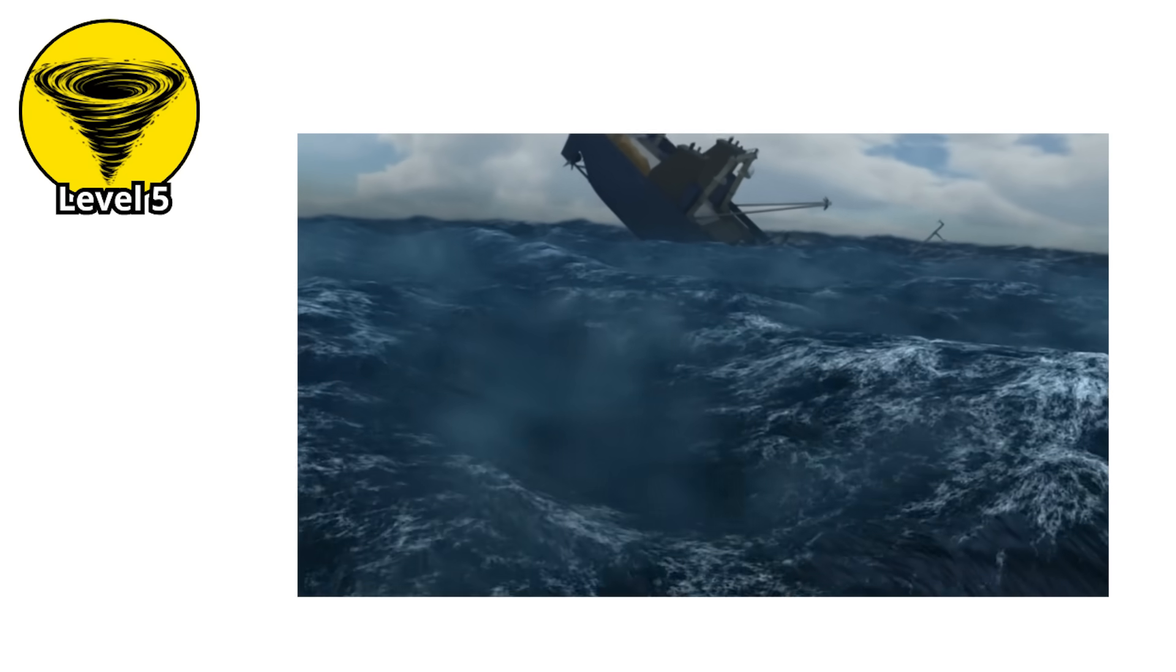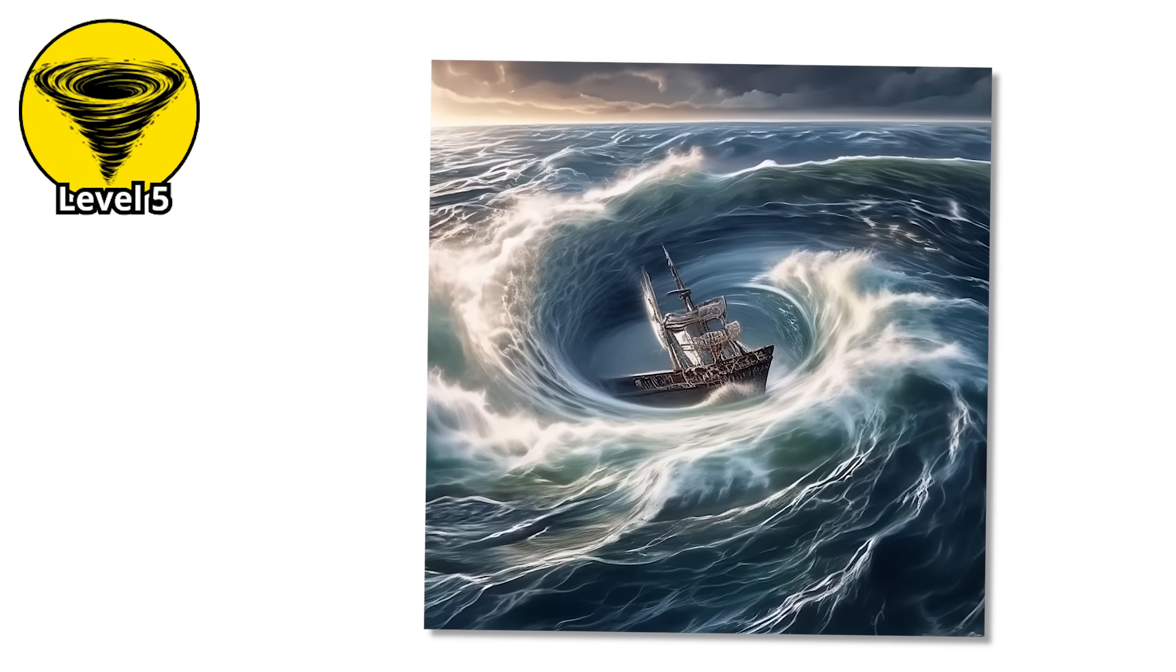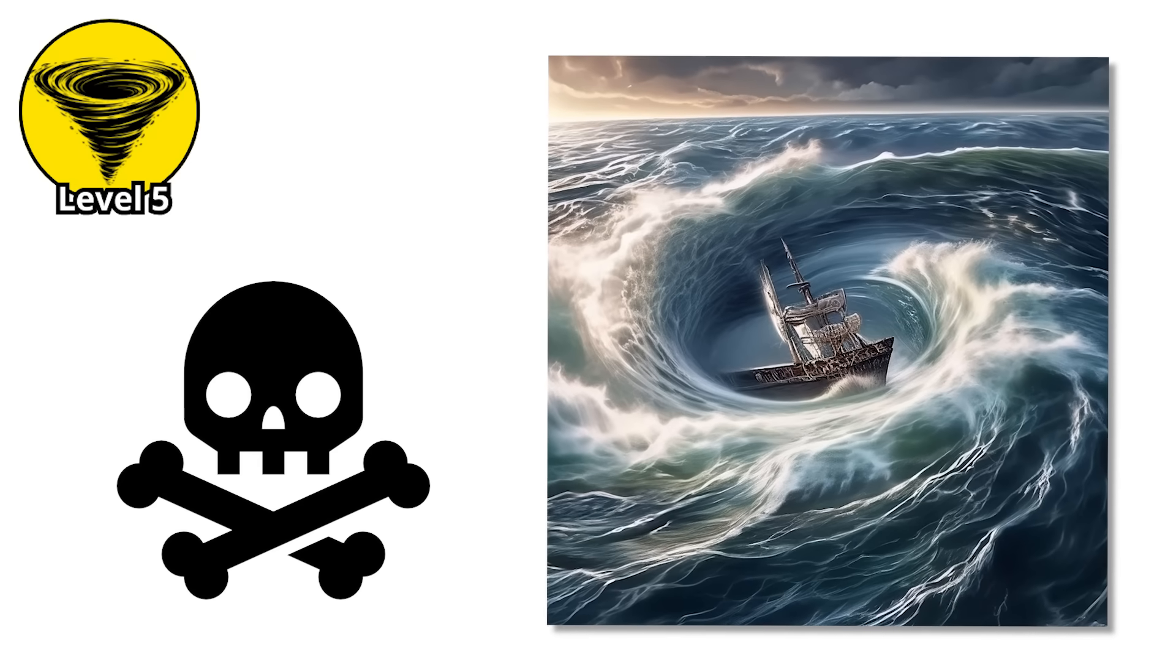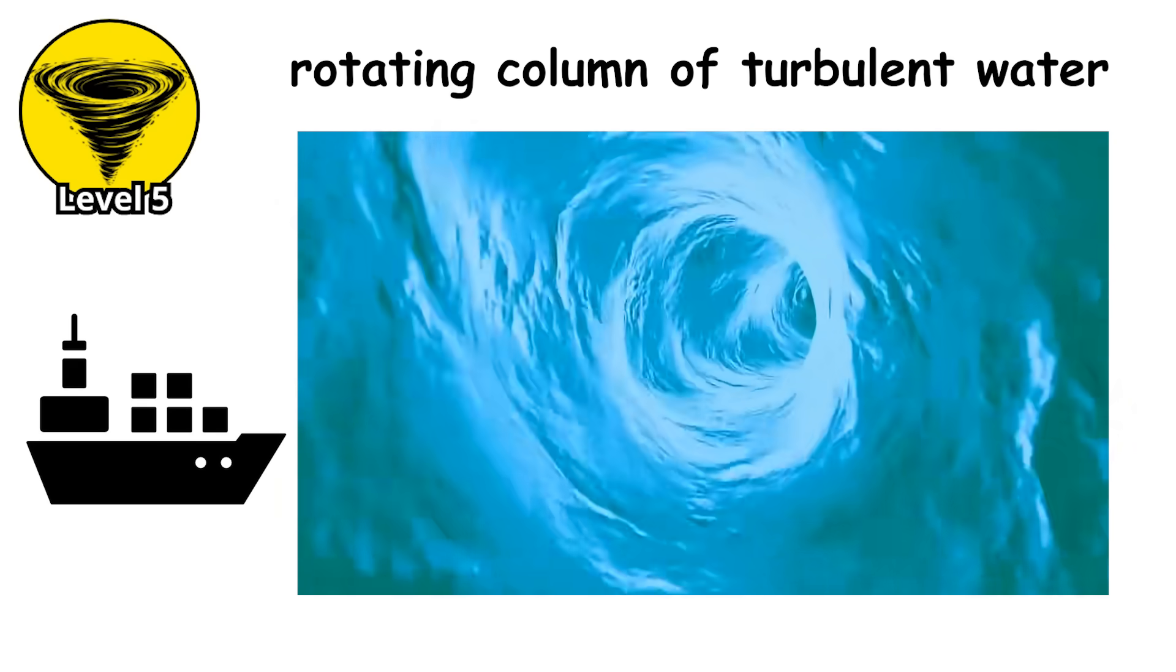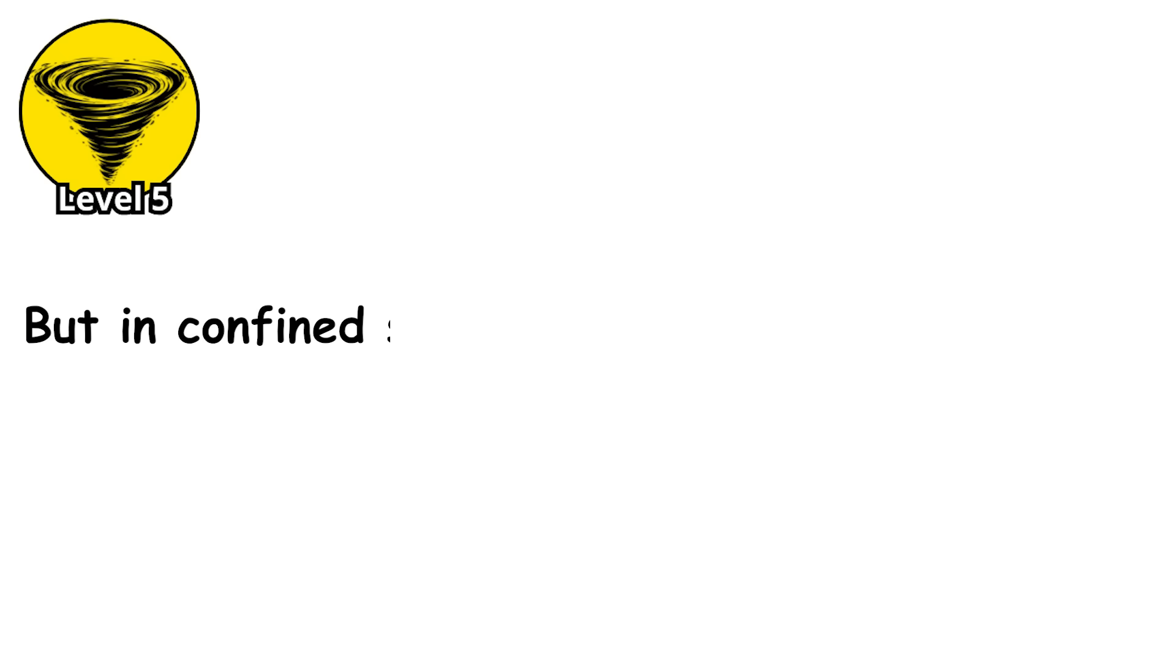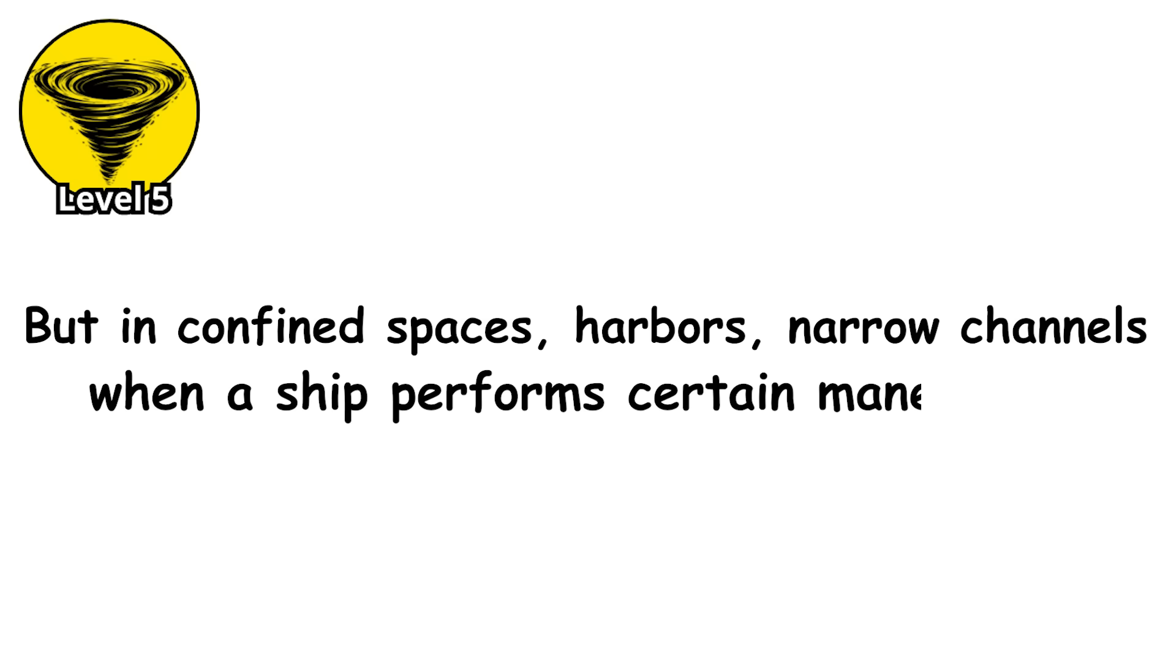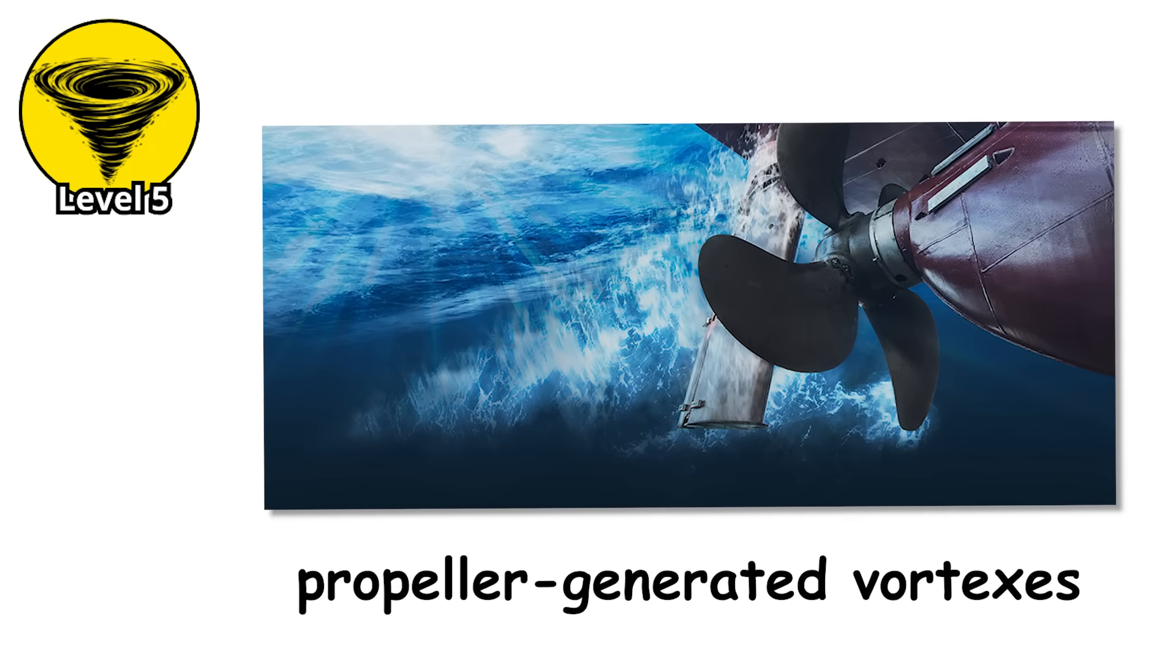Your ship is sinking. Not from a hole in the hull, not from a storm. From its own propeller. Large ships generate their own whirlpools, and in rare circumstances, these become deadly. When a ship's propeller spins, it creates a rotating column of turbulent water behind it. Normally, this disperses quickly into the surrounding ocean. But in confined spaces, harbors, narrow channels, or when a ship performs certain maneuvers, these propeller-generated vortexes can become surprisingly powerful and persistent.